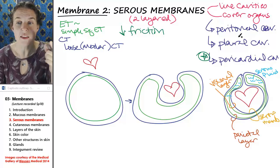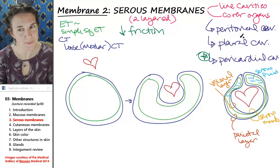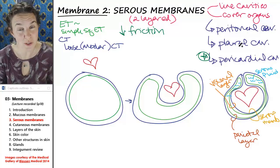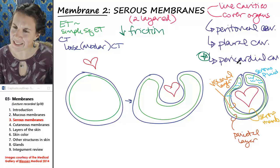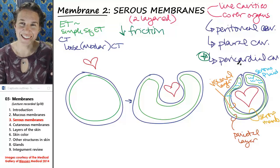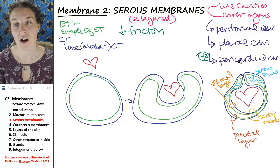We have the visceral peritoneum and the parietal peritoneum. We have the visceral pleura and the parietal pleura. And we have the visceral layer of the serous pericardium and the parietal layer of the serous pericardium.